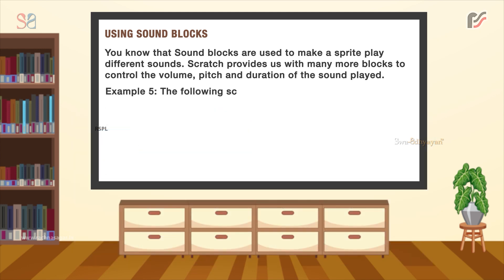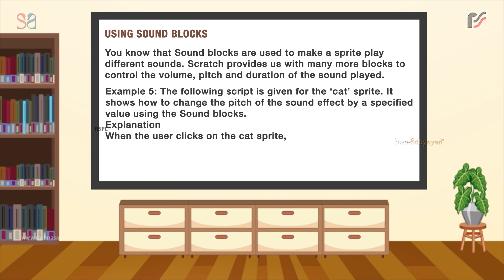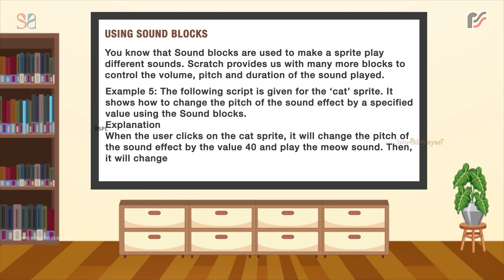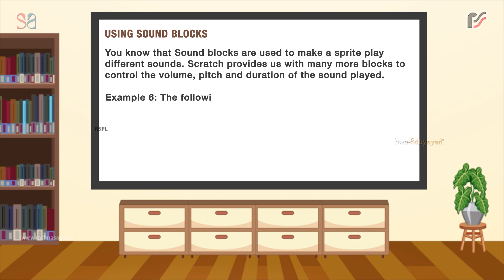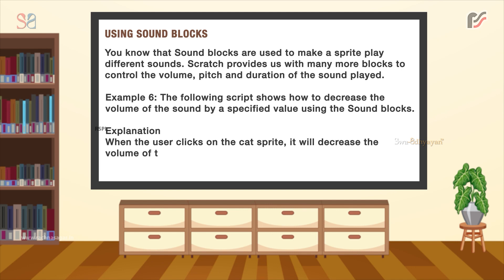An example: the following script is for the cat sprite, showing how to change the pitch of the sound effect by a specified value using Sound blocks. When the user clicks on the cat sprite, it will change the pitch of the sound effect by the value 40 and play the meow sound, then change the pitch by the value 80 and play the meow sound again. Another example shows how to decrease the volume of the sound. When the user clicks on the cat sprite, it will decrease the volume of the sound by a value of minus 20.